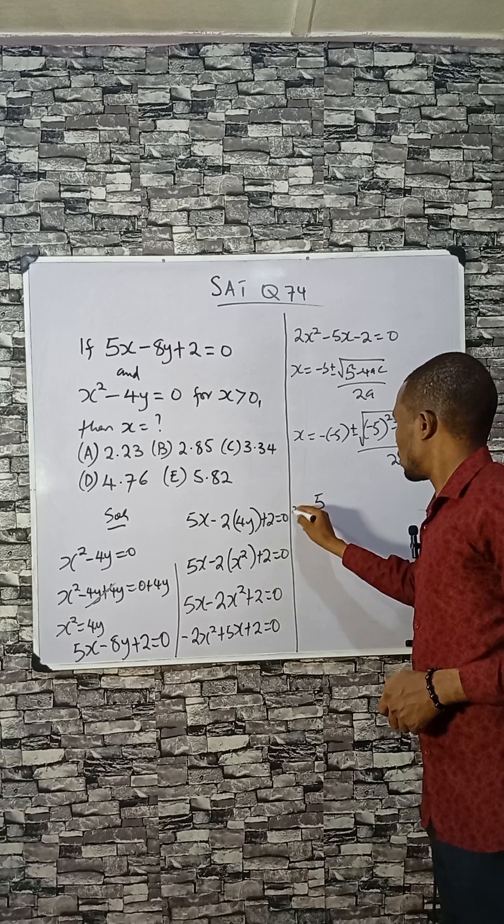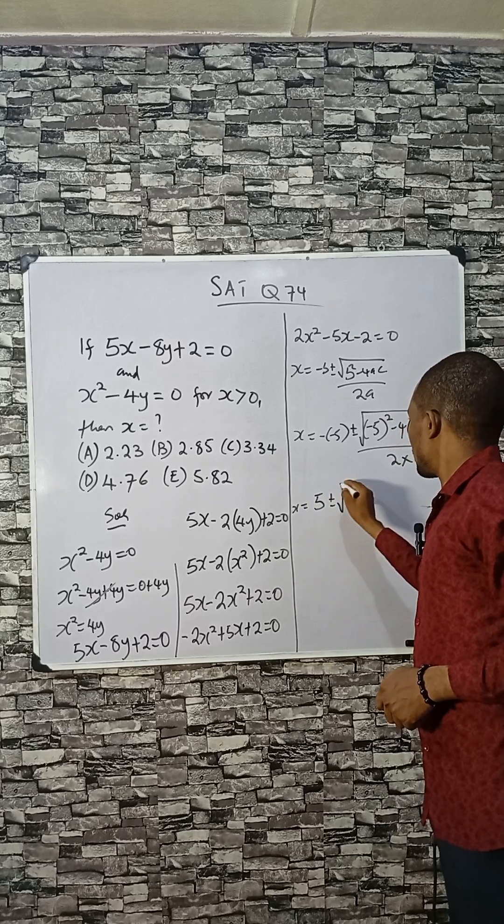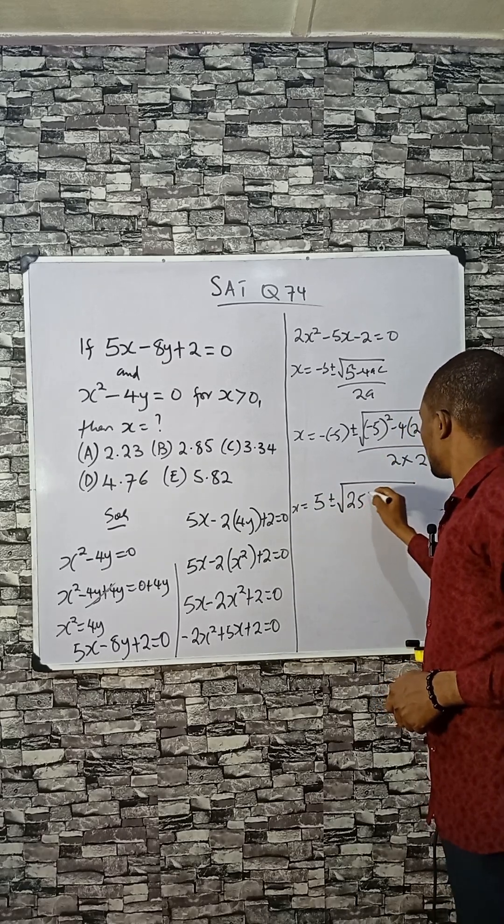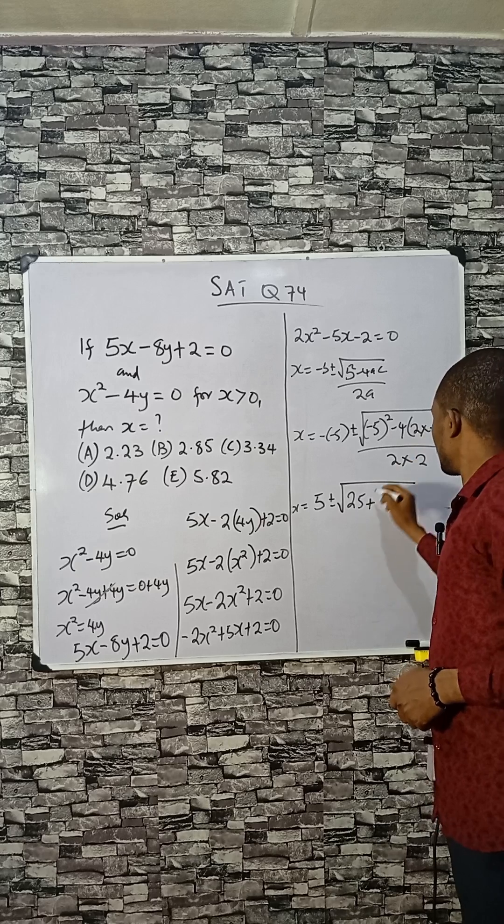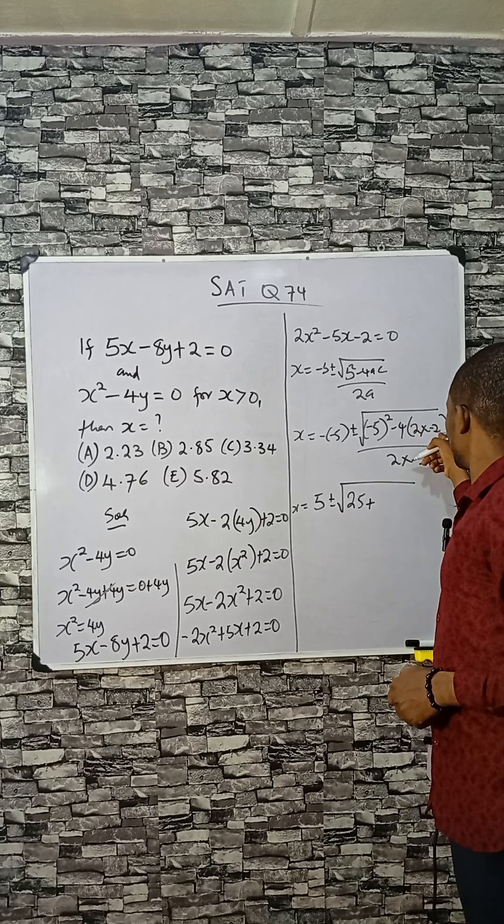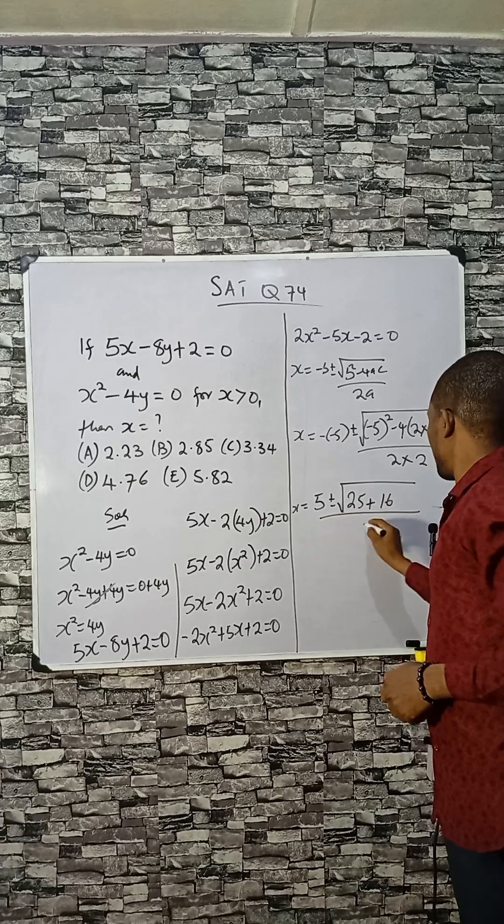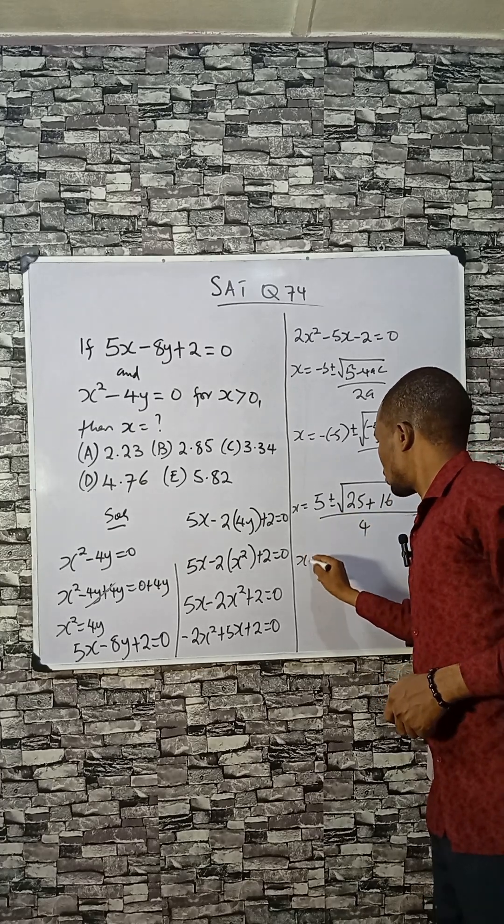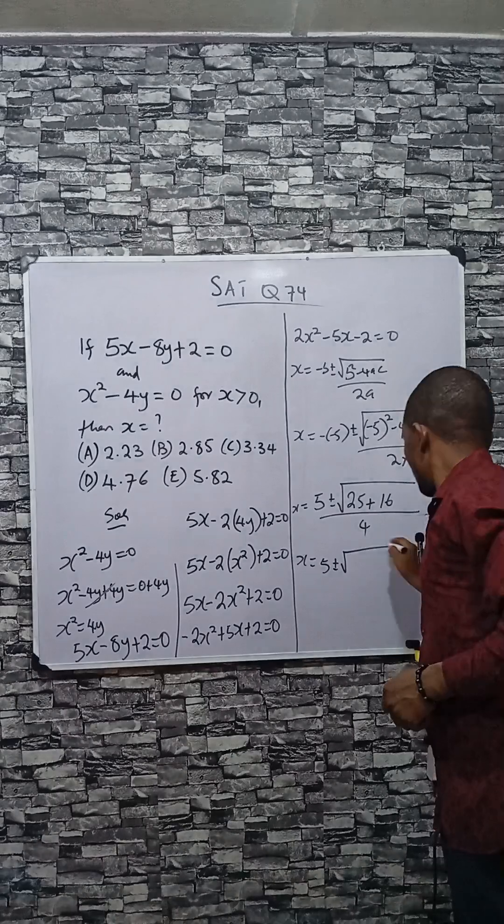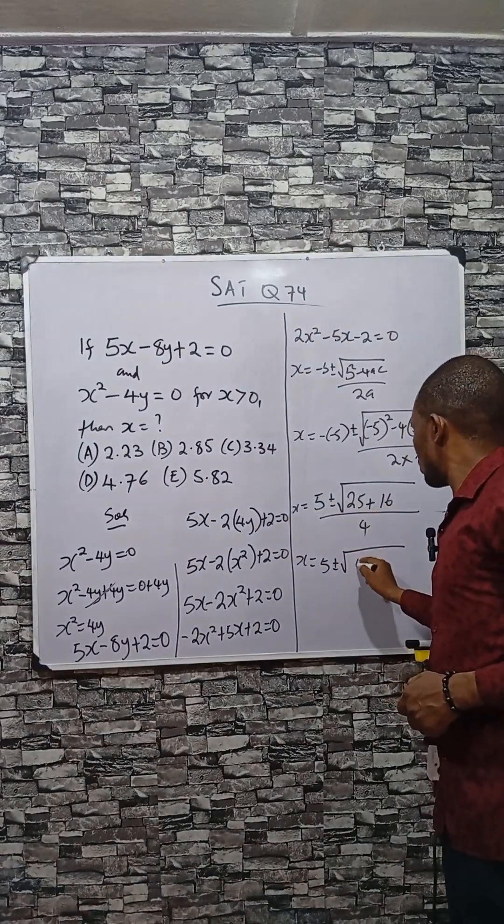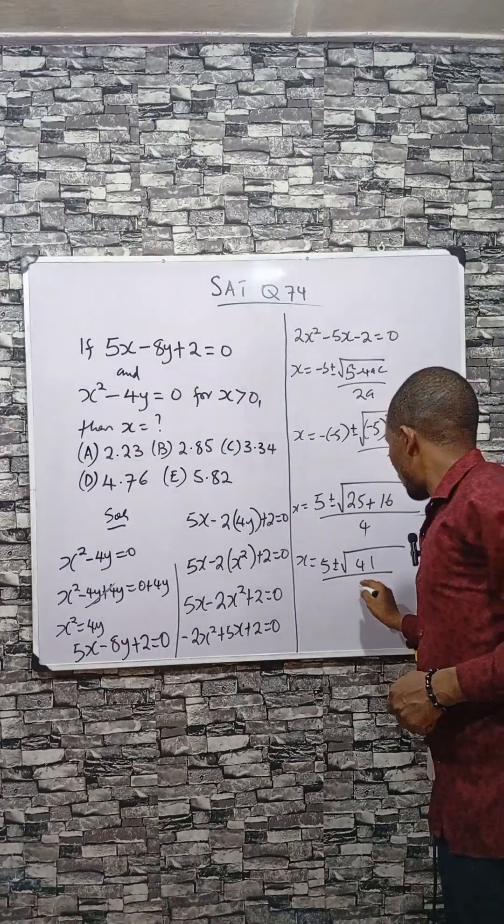This will be 5 ± √(25 + 16) / 4, because minus times minus is plus. So we have x = (5 ± √41) / 4.